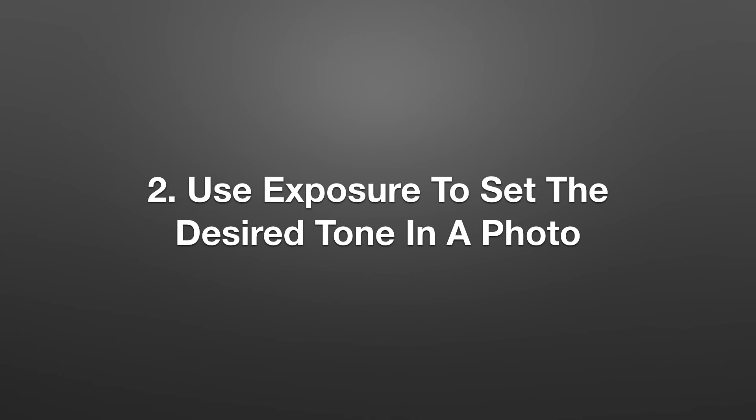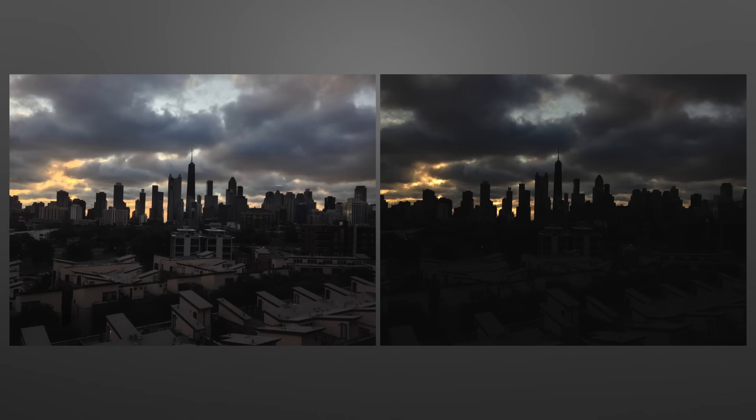Now that we have an idea on how to control exposure manually, let's look at another tip: using exposure to set the desired tone in a photo. Take a look at these two photos. The first thing you immediately realize is that it's pretty much the same location. The skylines and sky create a great backdrop and mood. The photo on the right appears darker and your eyes are immediately drawn to the skies and buildings in the background. The other one on the left appears a little brighter and you can see more of the tiny buildings right in front of the scene.